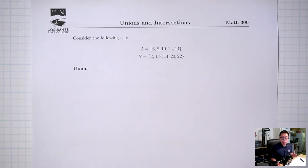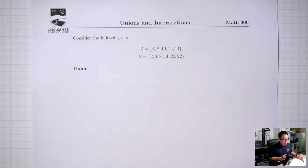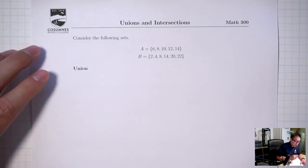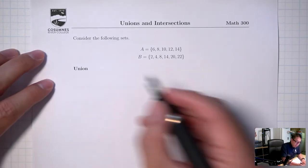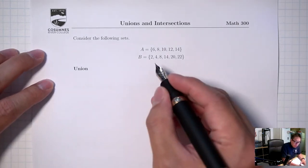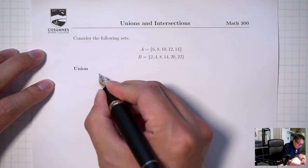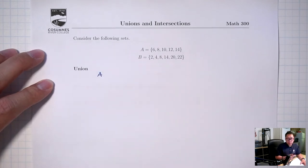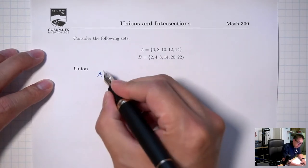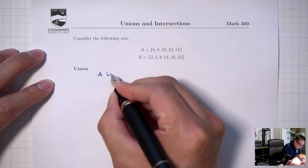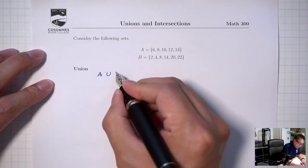Here I have two sets of numbers. The union basically means that I'm going to take these two sets and combine them to get a bigger set. Notation-wise, the way you write this out is the first set, which is A, union — the symbol for union is going to be a U — and then the second set, which is B.